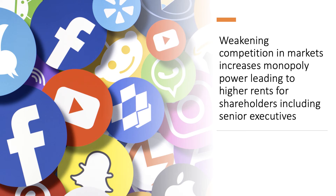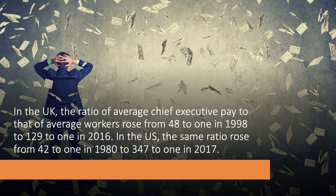Businesses have built their monopoly power — they might, for example, own huge digital platforms — and that lessening of competition increases monopoly power, leading to higher rents for shareholders, including senior executives. Writing recently in the Financial Times, Martin Wolf commented that superstar individuals and superstar companies earn monopoly rents because they can now serve global markets so cheaply. The monopoly rents must clearly have contributed to the widening gap in pay between senior executives and average workers. In the UK, the ratio of average CEO pay to that of average workers went up from 48 to 1 twenty-two years ago to 129 to 1 in 2016, and it's even bigger in the United States.